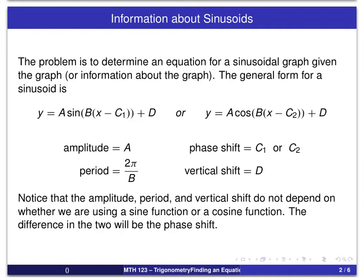In other words, we will get the same values of a, b, and d, and the only difference between the two will be in the phase shift, and that again will be dependent upon whether we use a sine or a cosine.